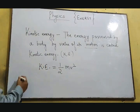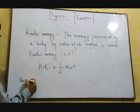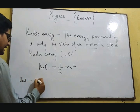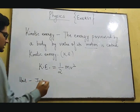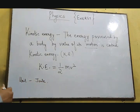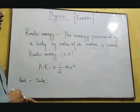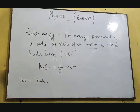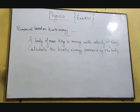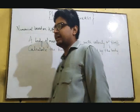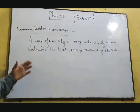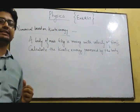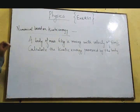The unit of kinetic energy is the same as potential energy — Joules. Let us talk about a numerical so that you can easily understand kinetic energy. A body of mass 4 kg is moving with a velocity of 5 m/s. We have to calculate its kinetic energy.